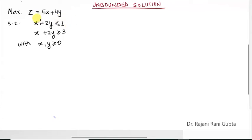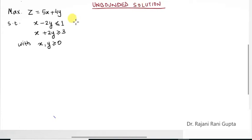Let's see another example of solving a linear programming problem using the graphical method. This solution comes out to be an unbounded solution. Let's see how to get it by graph.